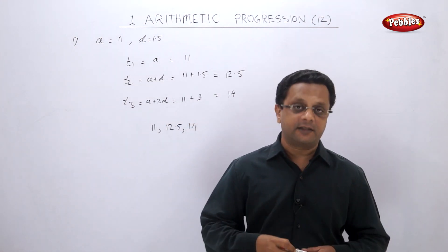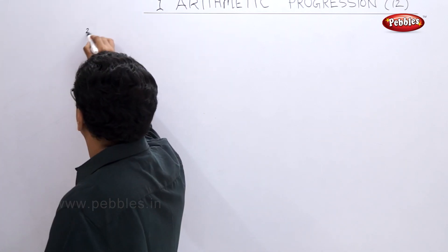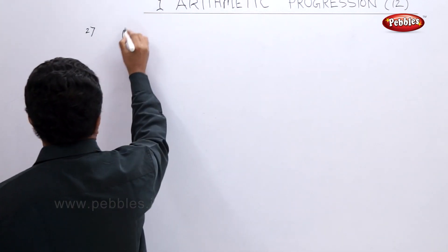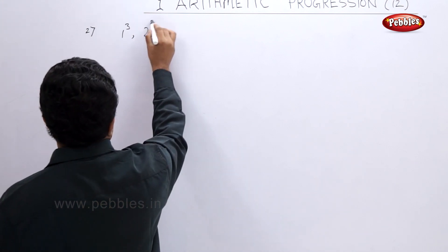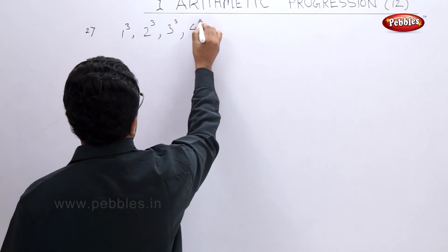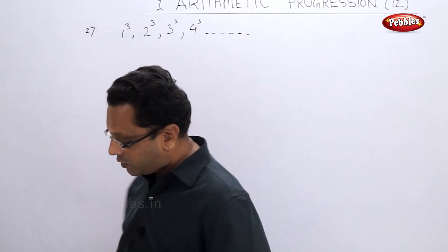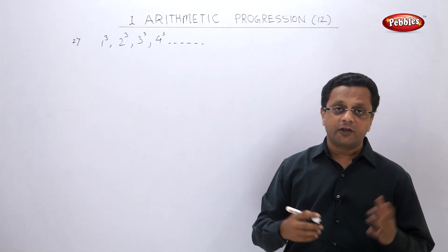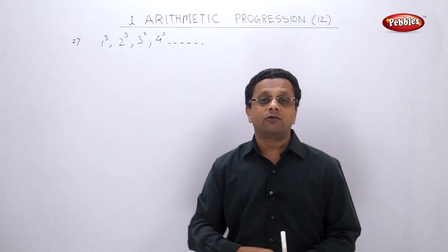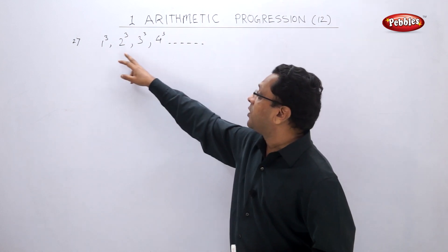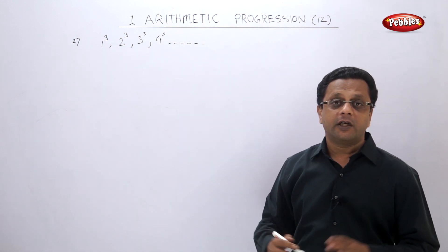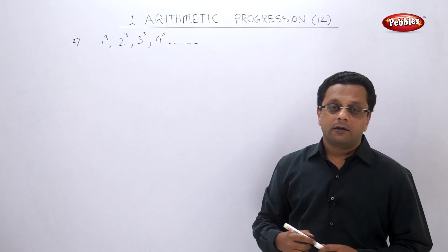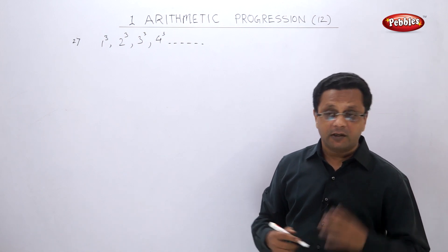The first three terms of the given arithmetic progression are 11, 12.5, and 14. You have to write this as a complete sentence. One more solved example: the sequence given is 1³, 2³, 3³, 4³, and so on. They have asked: state whether the following sequence is in arithmetic progression or not. Many students make the mistake of thinking the difference is 1, 2, 3, 4 and say it is in AP — but don't forget, these are cubes.